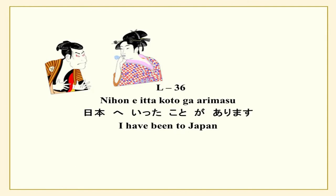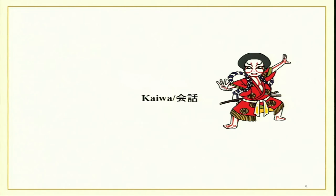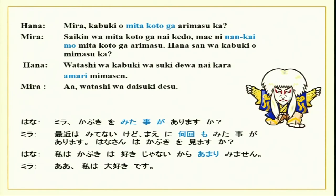As I always do, let us listen to the kaiva and then I will do the explanation. It is a small kaiva between Hana and Mira — Hana to Mira-san no kaiva desu ne, mijikai kaiva desu. Nagai kaiva dewa arimasen. Ja watashi wa ikkai yomimasu ne, minasan yoku kite kudasai. Wakaranai koto wa ato de sesumei shimasu.